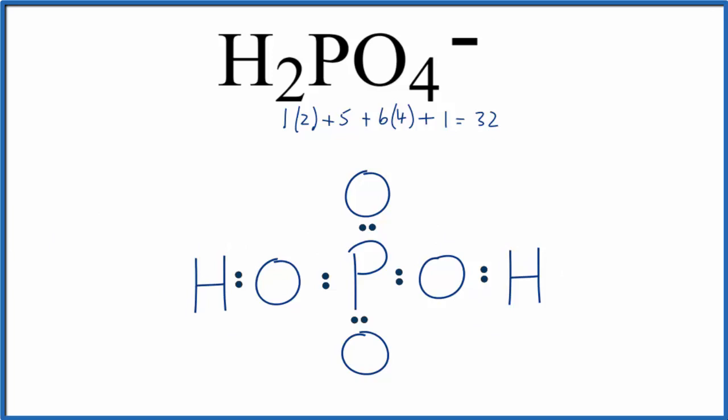Next, let's put valence electrons around the oxygens. So we've completed the octets on all of the oxygens and the central phosphorus, and we've used 32 valence electrons. So this looks like a really good Lewis structure.